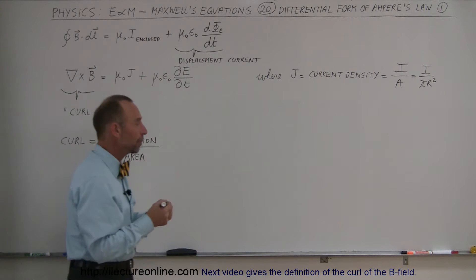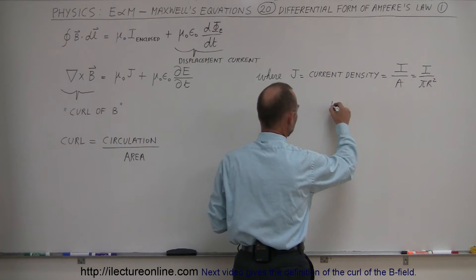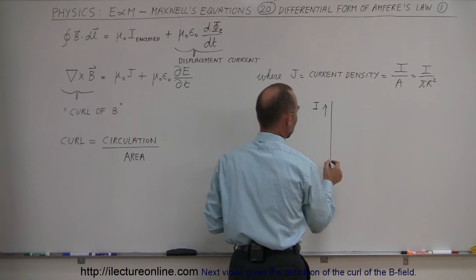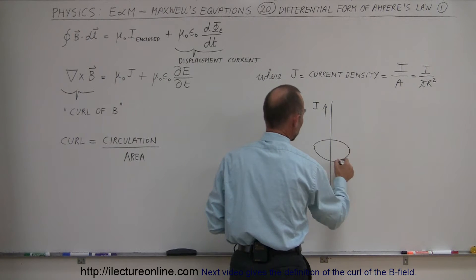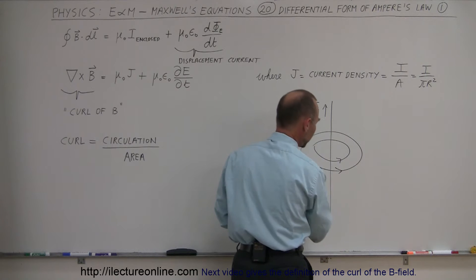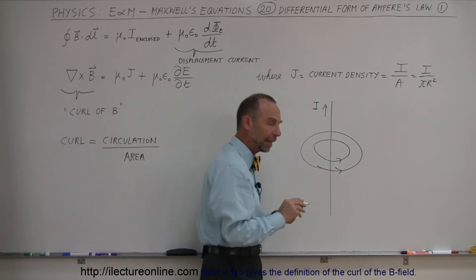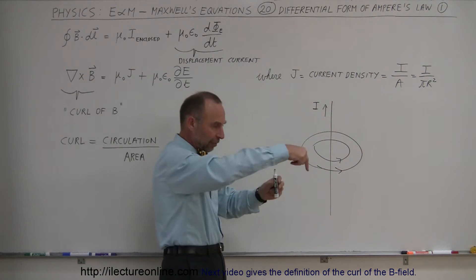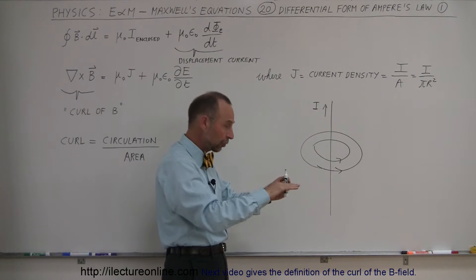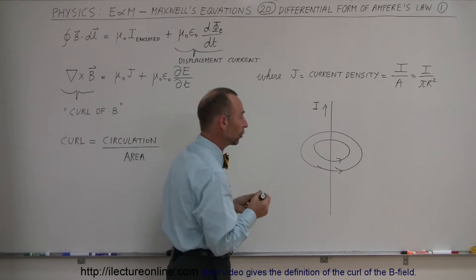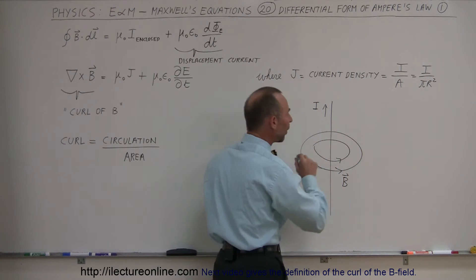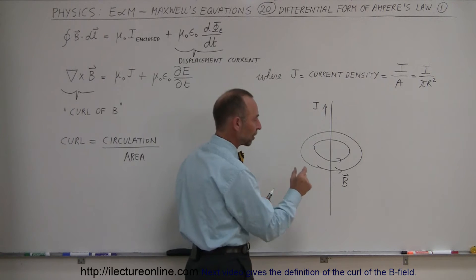For example, if we have a current wire with a current running through it, we can imagine there's going to be a magnetic field around the wire that loops around it. The magnetic field goes around the wire — it gets weaker as you go further out, and stronger as you get closer in. So the magnetic field is in a circular direction around the wire.